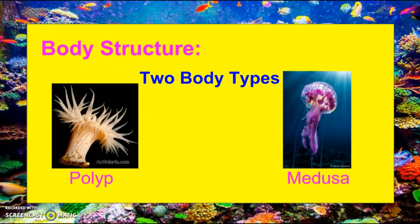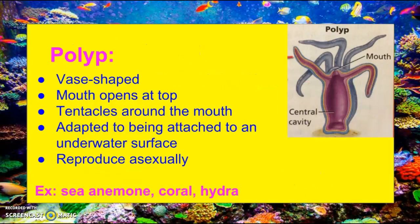When it comes to the body structure of cnidarians, you have two types. You have the polyp and then you have the medusa. So let's first talk about the polyp. Polyps are vase-shaped. The mouth opens at the top, and the tentacles are around the mouth. Most of these are adapted to being attached to an underwater surface like a rock.